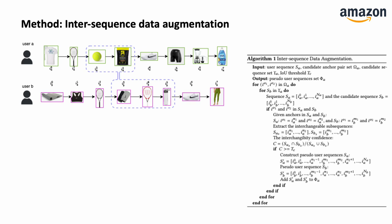In detail, we first constrain exchanging candidates with the confidence filter. When two customers share more identical purchases, their shopping behaviors are more similar and the exchanging is more confident.